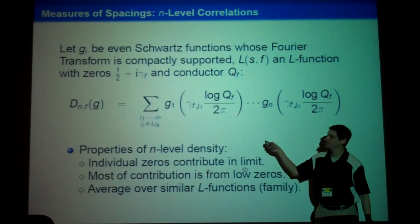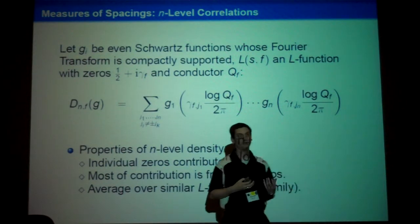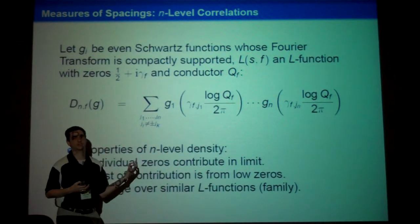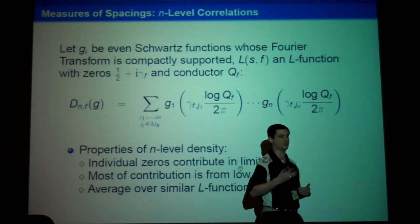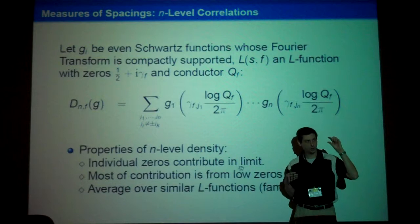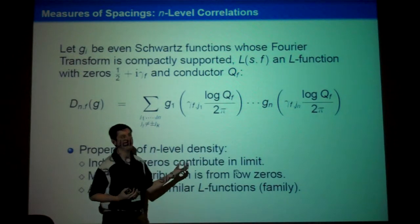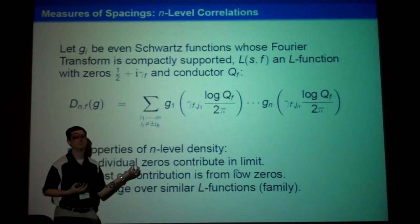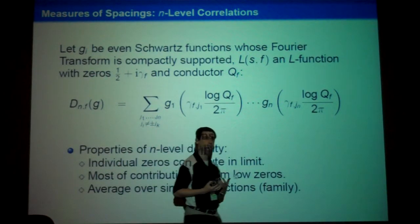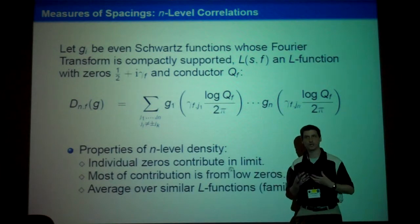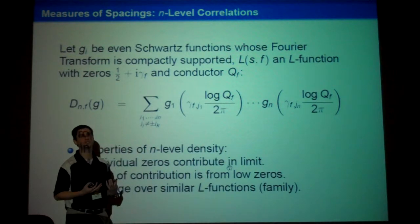Unlike the n-level correlations or the spacings between zeros, the n-level density is a much better statistic if you like elliptic curves, because individual zeros contribute in the limit and the zeros that contribute most are the ones near the central point. However, while this is good for us, it's also bad for us: for one specific L-function near the central point, you only have a small number of zeros and thus lose the ability to do averaging. So we go back to what we were doing in random matrix theory: take a bunch of matrices chosen from some ensemble. The analog here is we look at families of L-functions.